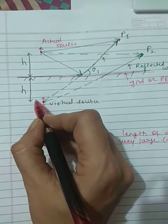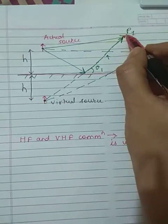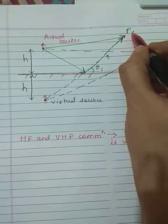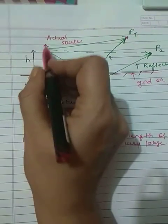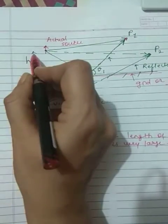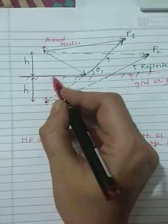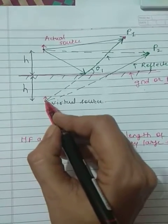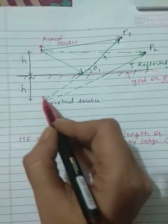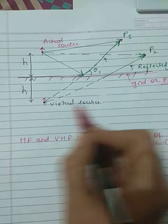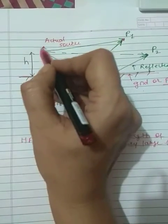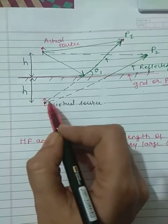It means that at far field point P1 there are radiations due to the actual source which is situated above the ground and due to an imaginary source which is called the image of this actual source which is situated below the ground. Current direction in both these sources is the same.